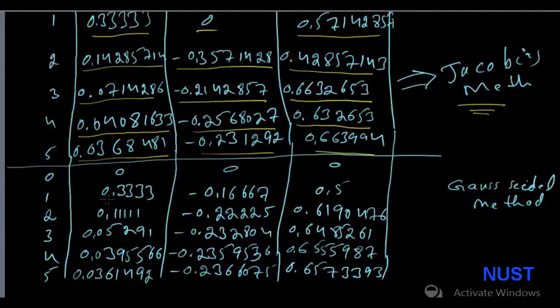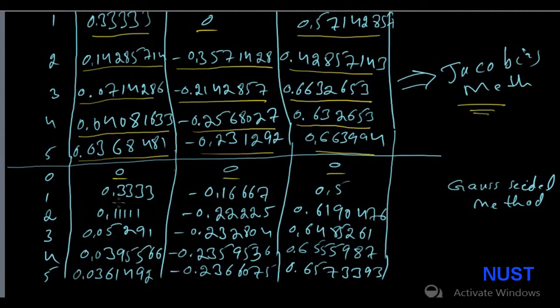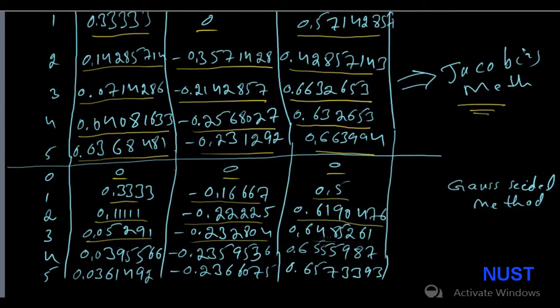In the case of Gauss-Seidel method, we use the most recent value of variables. This leads to the fact that it becomes a fast-converging method compared to Jacobi. Therefore, it is more superior than Jacobi method.